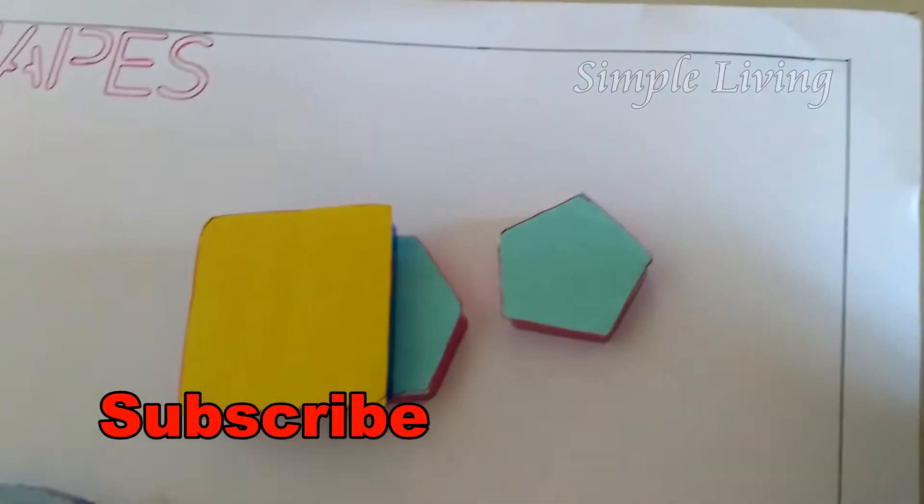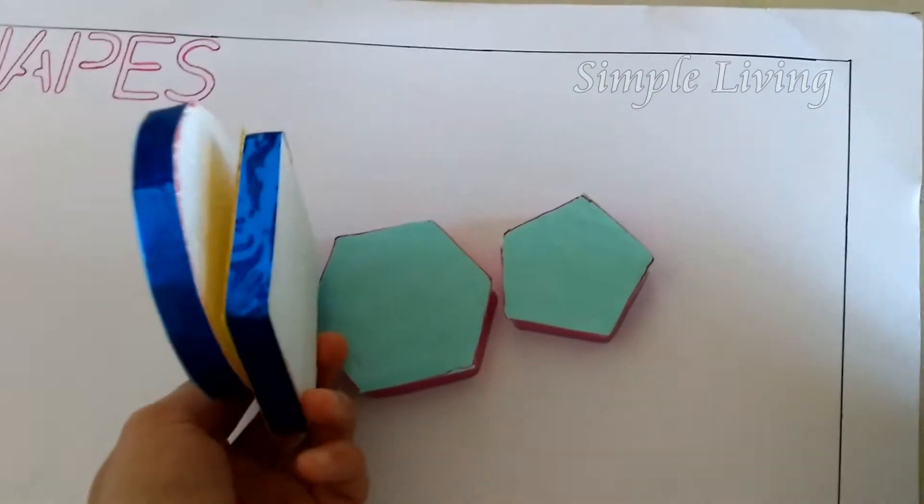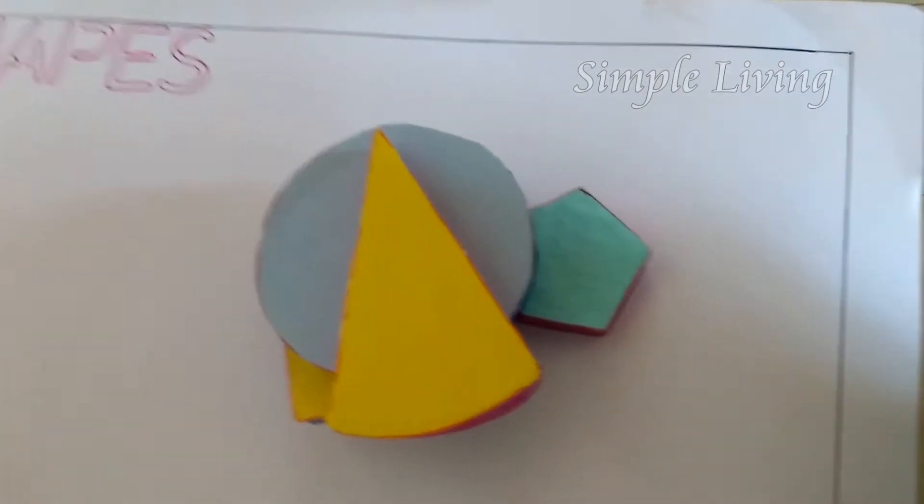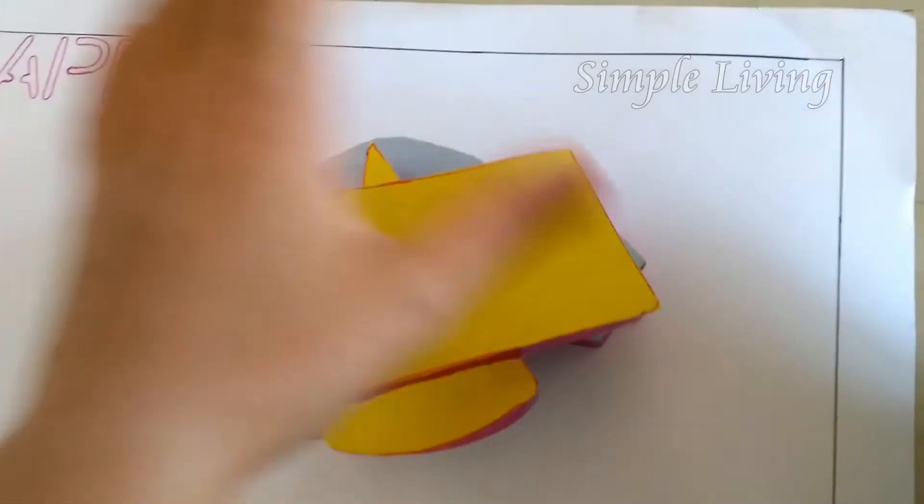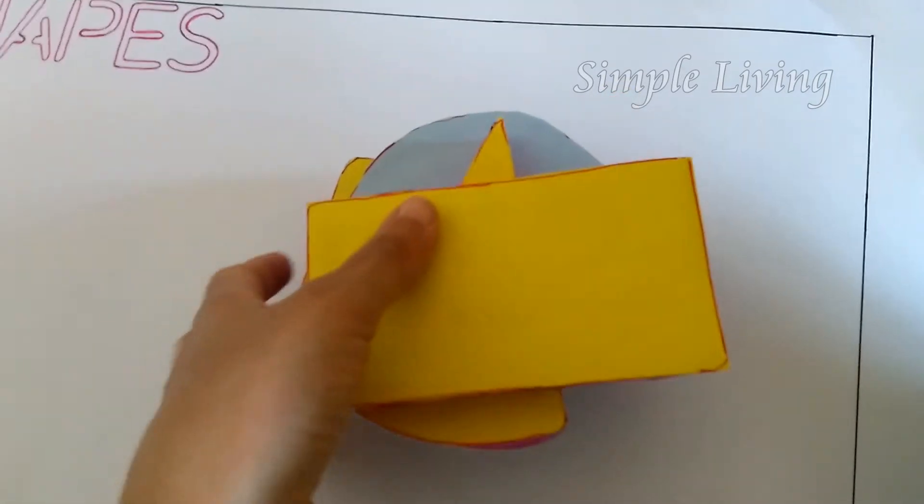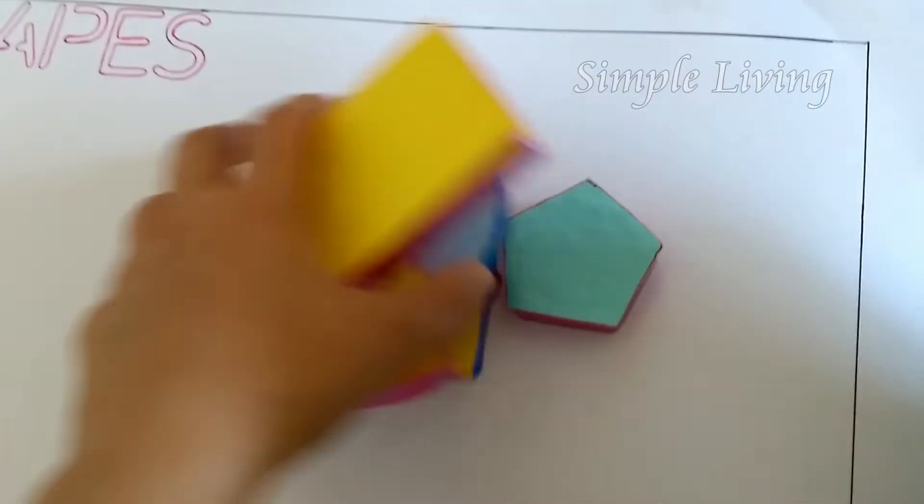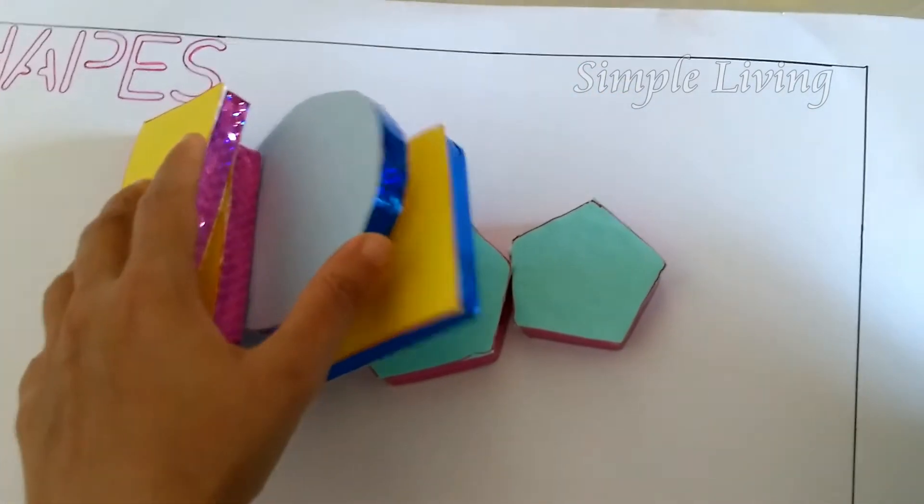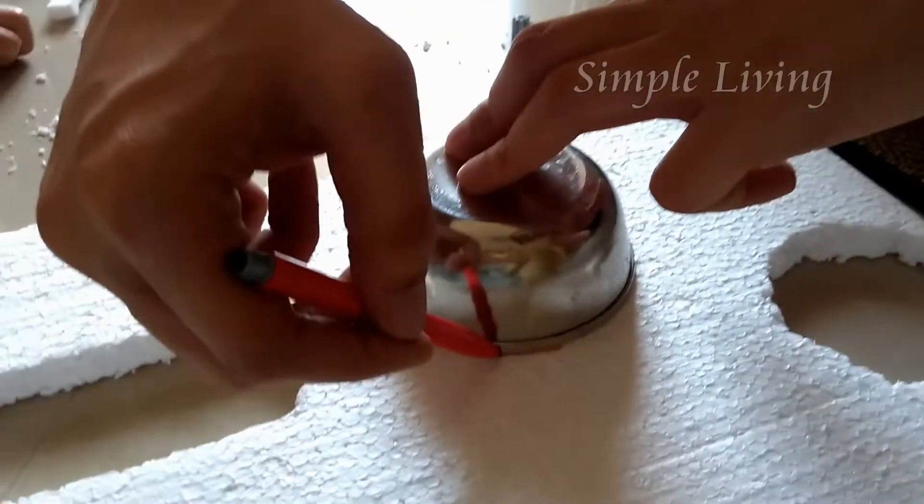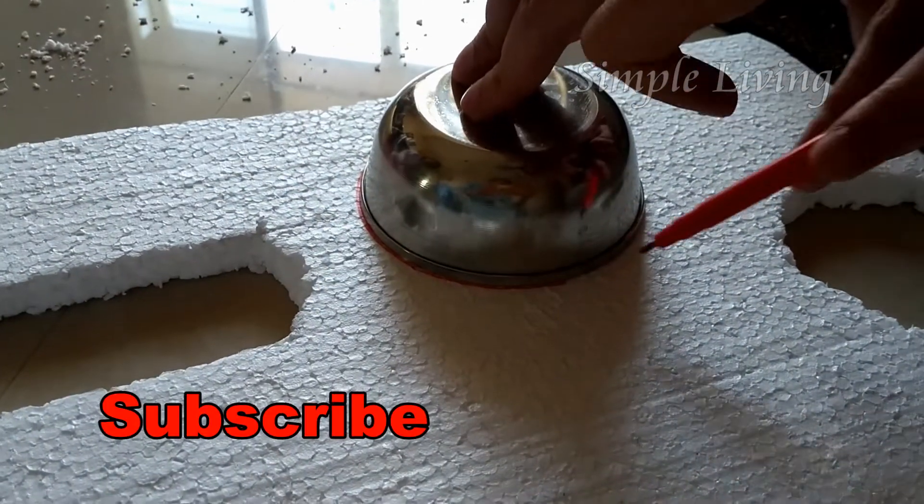Here you can choose square, hexagon, pentagon, cone, circle, square, rectangle and shapes. So sample, first circle.